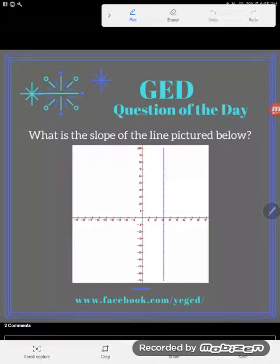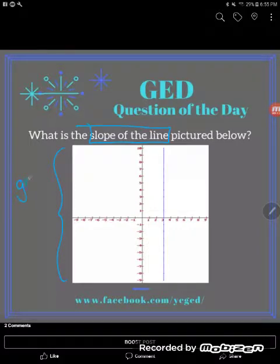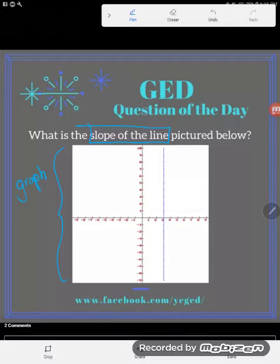Once again, we've been asked to find the slope of a line. What is the slope of the line? And what they've given us here is a graph or Cartesian coordinate plane. Sometimes we call it an XY plane.